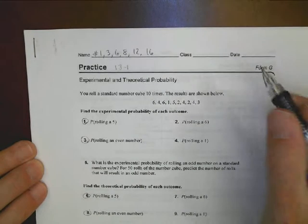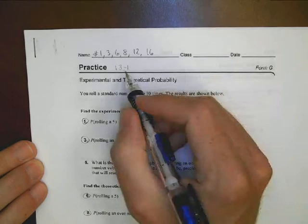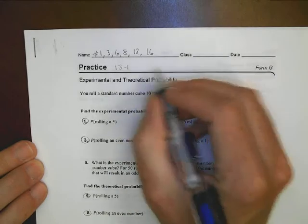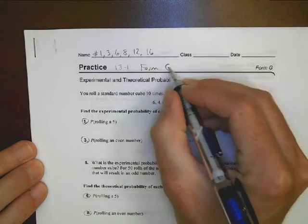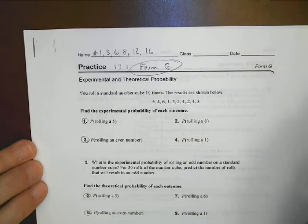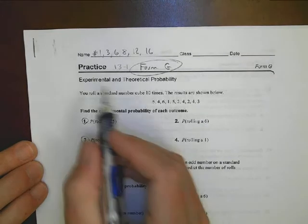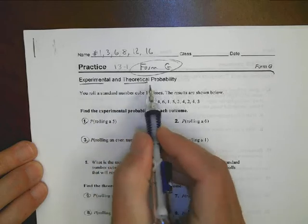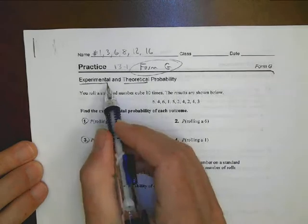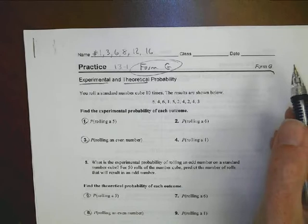All right, here we go. This is Math 2, Unit 13, Lesson 1, looking at Form G for the homework help. That's what Buchanan passed out at least this year. I'm going to look at a couple sample problems here, looking at experimental and theoretical probability. You do need to know the difference in both of those that will show up on your unit test this time.